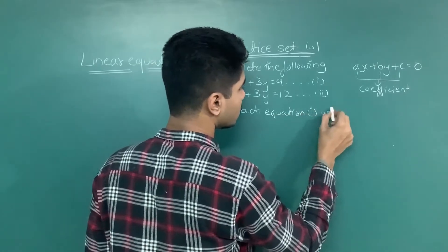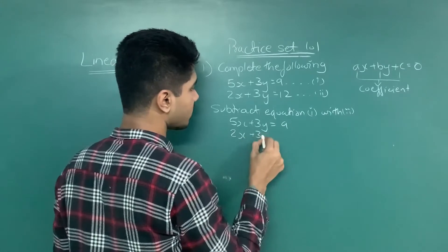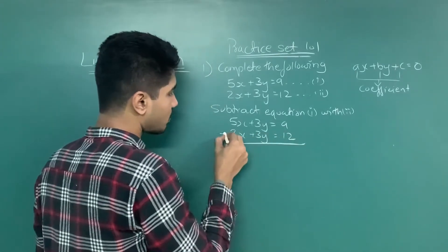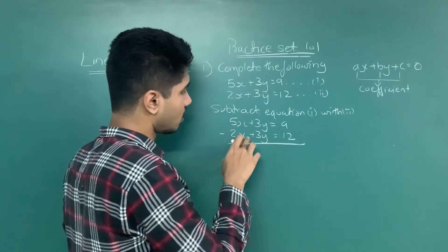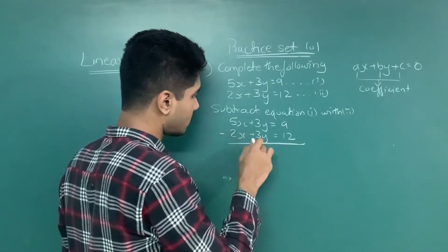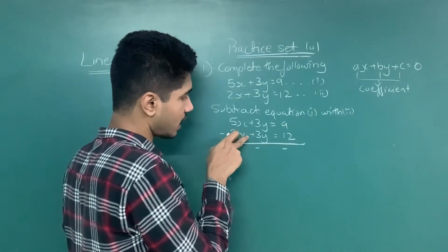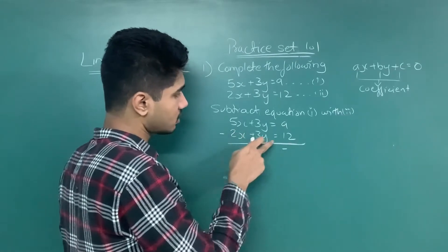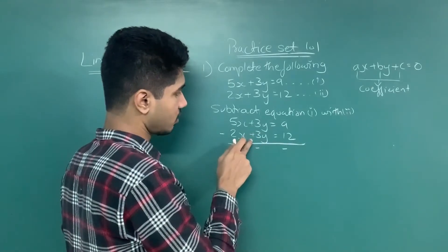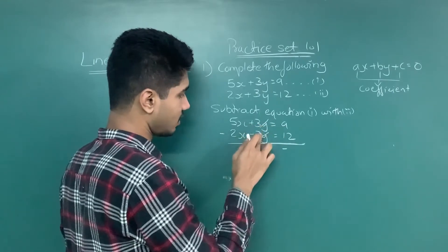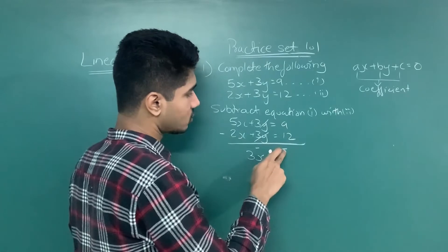Subtracting equation 1 with equation 2: 5X plus 3Y is equal to 9, and 2X plus 3Y is equal to 12. When you subtract the second equation, the signs will change — 2X was positive becomes negative, 3Y was plus becomes minus. The sign is reversed, that is plus to minus. So plus 3Y and minus 3Y cancel out. 5X minus 2X gives 3X, and 9 minus 12 gives minus 3.